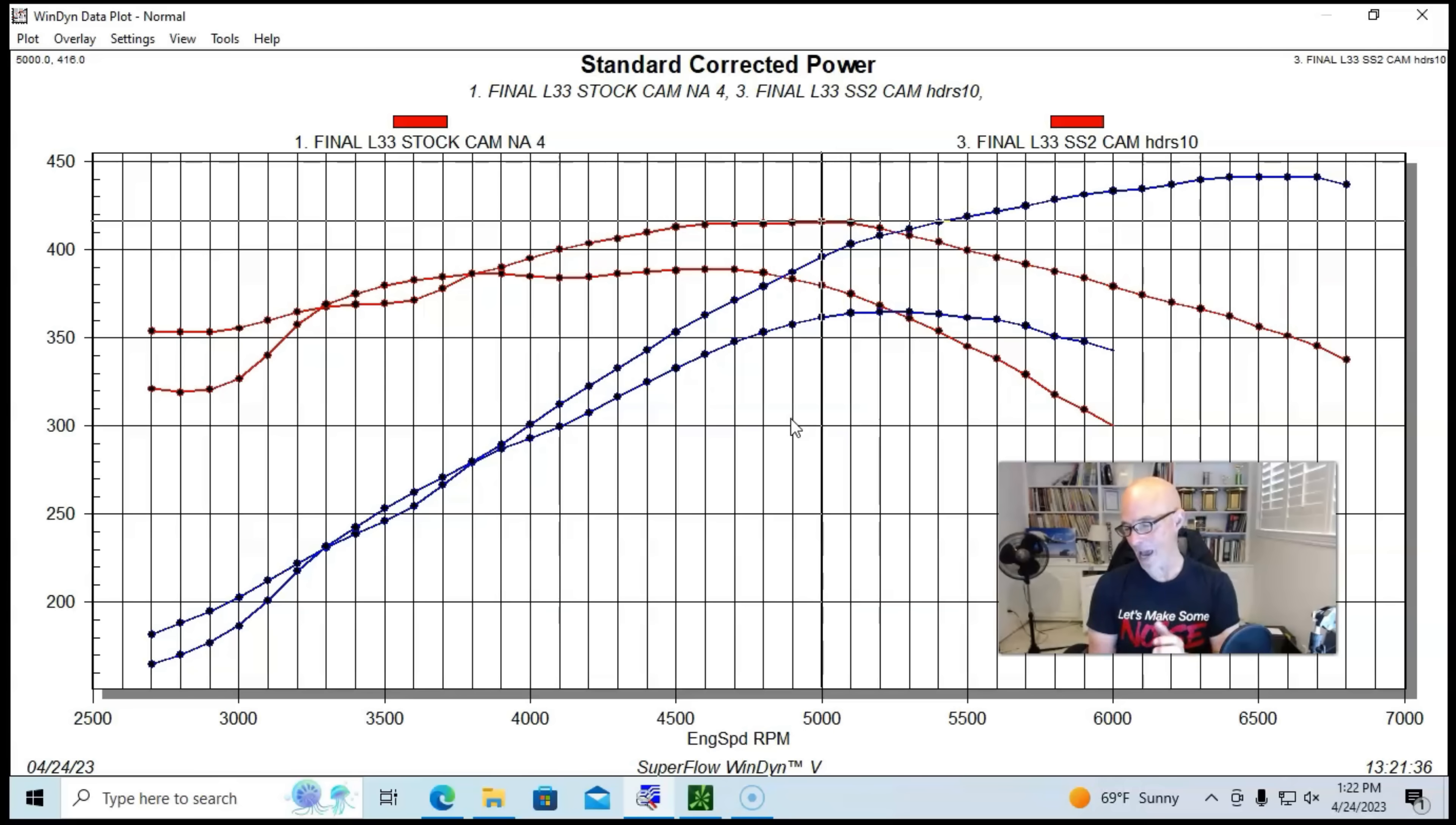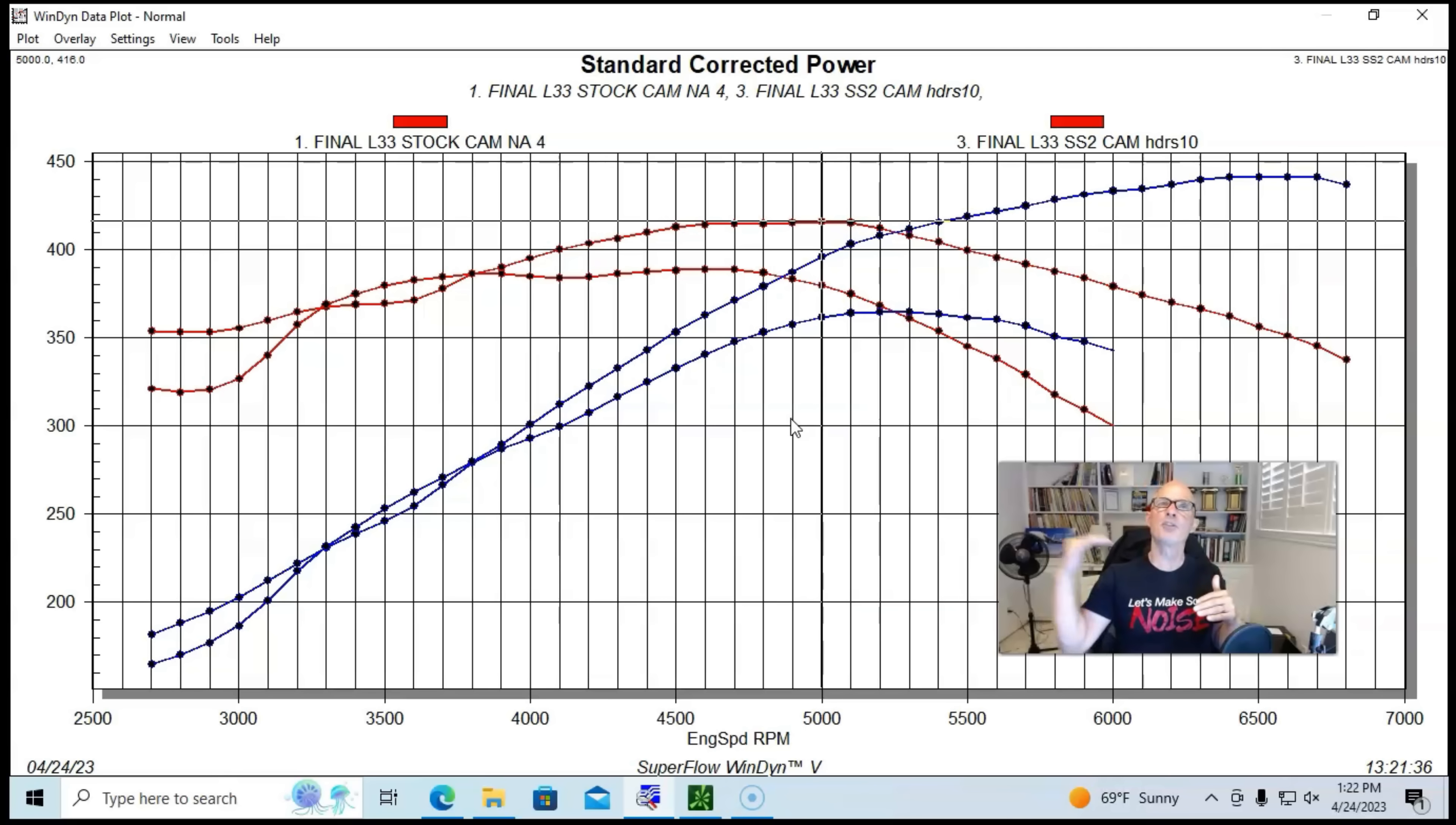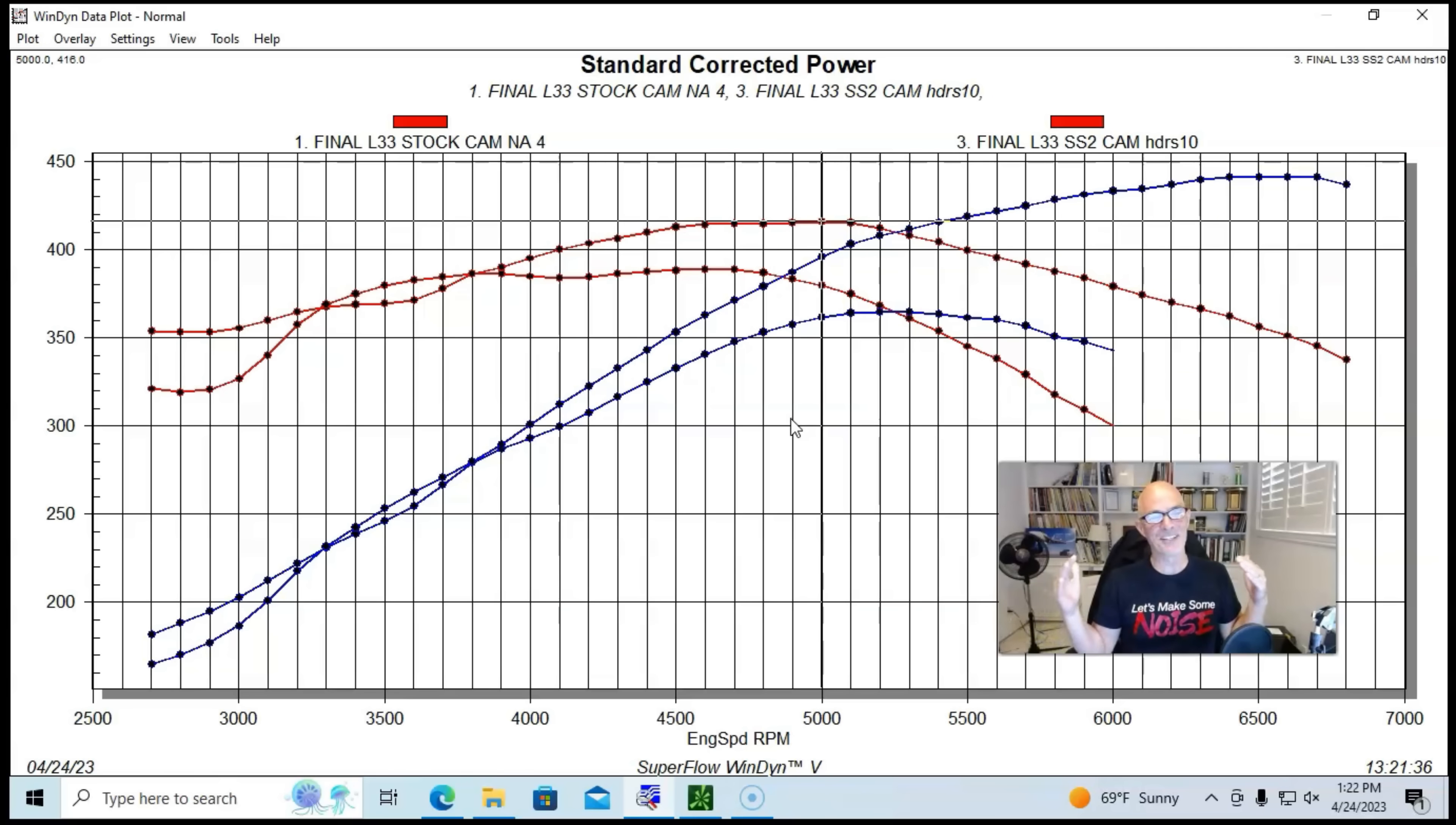So now that we're armed with that, we've got a 76 horsepower gain with the Sloppy Stage 2 on the 5.3. All we have to do now is look at what that camshaft does on the 6 liter, and then we can extrapolate. Basically, we're going to do exactly what I tell people that they should never do, and they should always test. So what the heck? Let's jump right in.